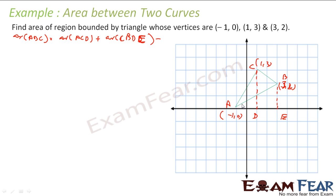From this you subtract the area of triangle ABE, and you will get the area we are looking for. We do this because finding area of ACD is simple — I know the equation of the curve and can integrate from the appropriate x limits. Finding area of CDE is also simple by integrating the corresponding line equation with respect to x.